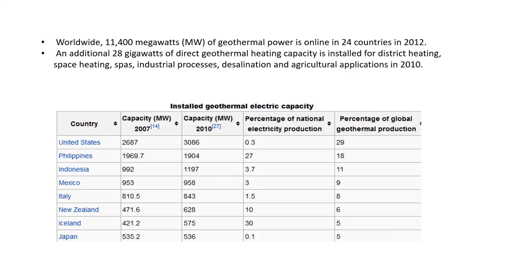Here is another picture of the Krafla geothermal system. 11,400 megawatts of geothermal power, along with an additional 28 gigawatts of direct geothermal heating capacity, is installed for district heating, space heating, spas, industrial processes, desalination and agricultural applications as of 2010. Below is the list of countries with installed geothermal electrical capacity. The USA tops the chart, followed by the Philippines, Indonesia, Mexico, Italy, New Zealand, Iceland, and Japan.